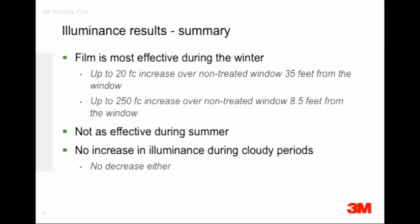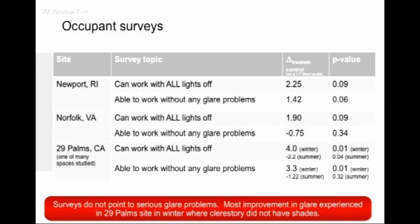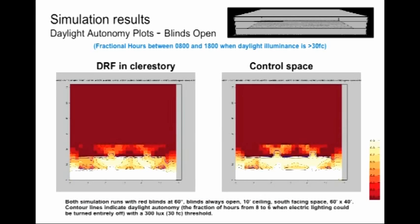Coming to glare — we had to resort to surveys. At three of these sites, occupants were reporting pretty much an improvement in luminance without an increase in glare. At the 29 Palms site — where I showed pictures of people putting up paper and aluminum foil on windows — we saw up to a four-point improvement on the scale. In summer there was a small negative impact, but those were different survey respondents since soldiers move around. Overall the data is showing there is not a big glare problem in these spaces.